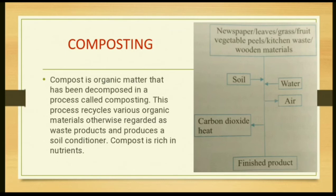Compost is rich in nutrients because it comes from biodegradable organic waste like trees, leaves, vegetables, peels, discarded foods, and paper, which can be turned into manure. As shown in the picture, newspaper, grass, fruit, and vegetables are put into the soil where they react with water, air, and carbon dioxide to produce manure for kitchen gardens or large-scale agriculture.